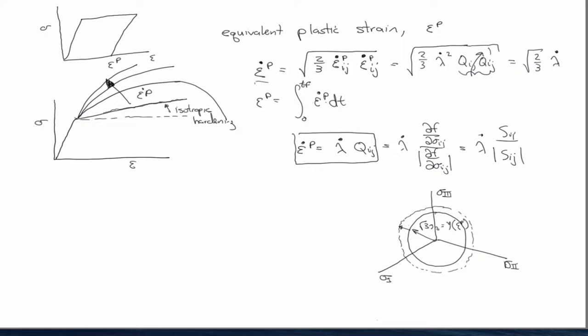What lambda is, or lambda dot, is again, when you find yourself outside the yield surface, what lambda does is it returns you. Because outside the yield surface is an invalid place to be. Remember, this is just a theory, right?